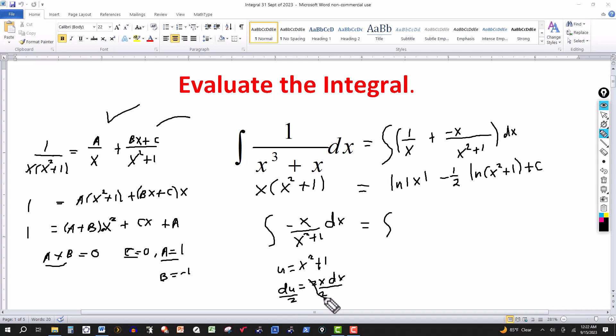This cancels out, so x dx equals du over 2. The minus I'm going to take outside, and then the x dx is replaced by du over 2. I'm going to put that out in front, so this will be minus 1 half over u, where u is x squared plus 1.